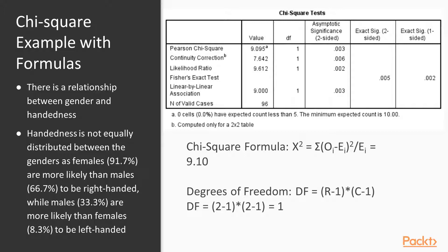One last thing to note: the footnote in the output states that zero cells have expected counts less than five, and the minimum expected count is 10. This is important and ties directly into the assumptions of the chi-square test of independence, which we'll discuss next. Having no cells with expected counts less than five is a good thing.